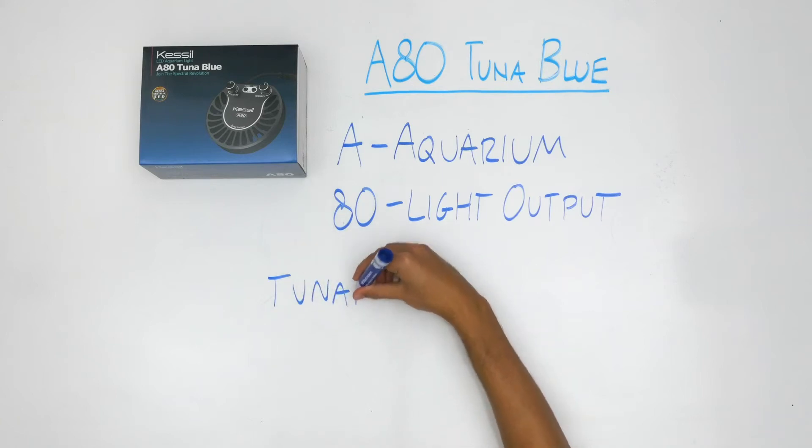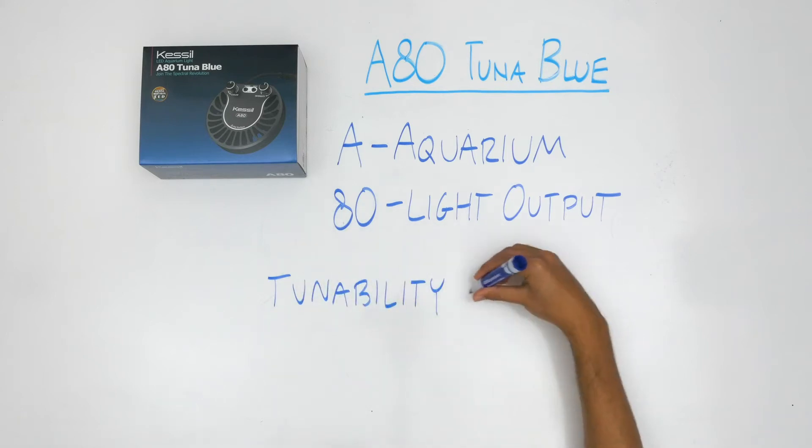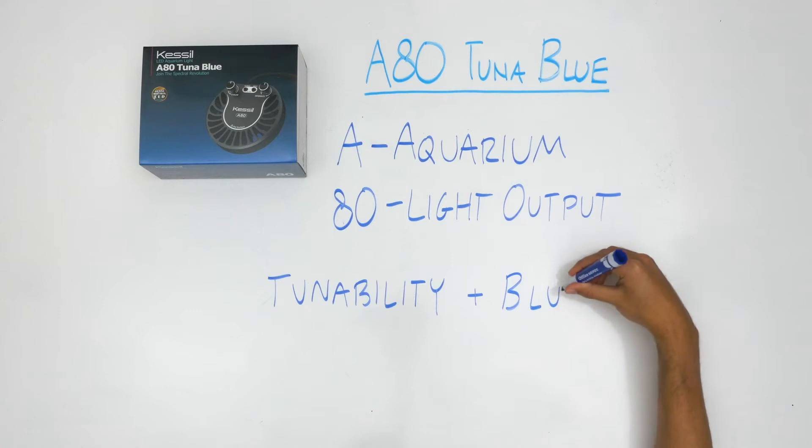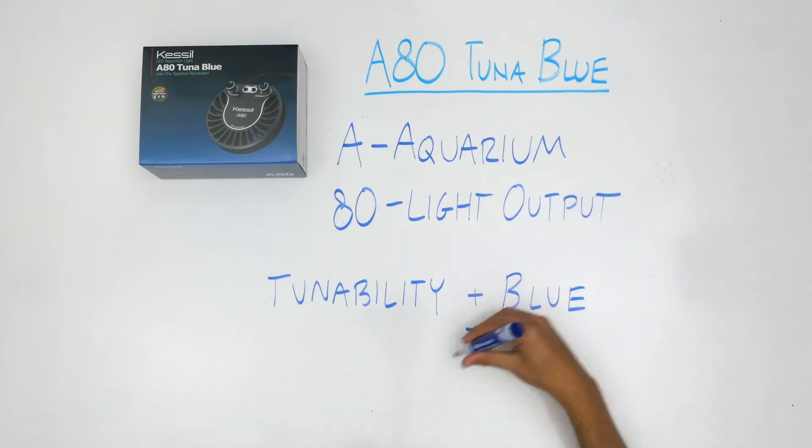Finally, Tuna Blue is a combination of two words, tunability and blue. Blue for the color range of light that is best for promoting coral health, and tunability for the user's ability to tune this light to meet specific color preferences.